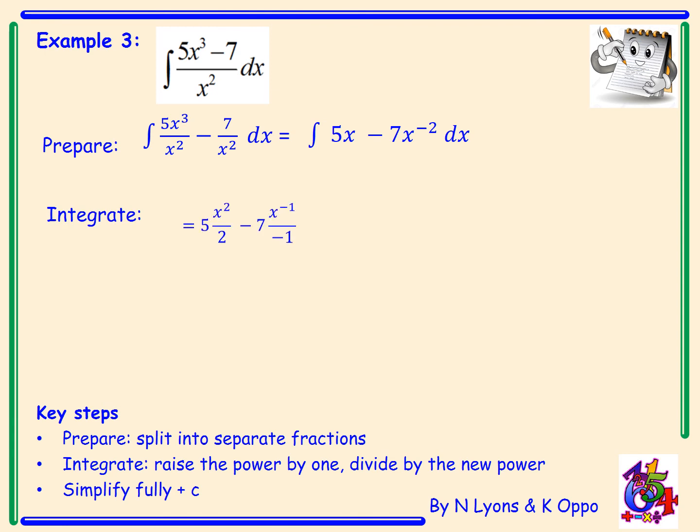That means I've now got 5x squared divided by 2 minus 7x to the power minus 1 divided by minus 1. Now we have to simplify. That gives me 5x squared over 2 or 5 over 2x squared plus 7 over x plus c. So again the two negatives make a positive, and x to the power minus 1 becomes 1 over x. And I've added my constant of integration.